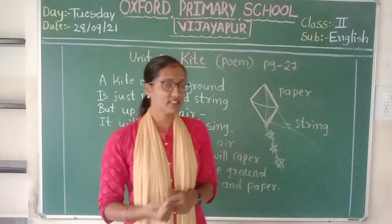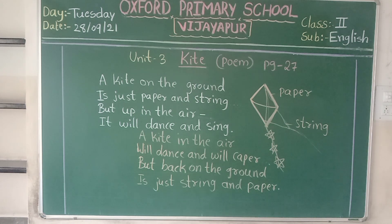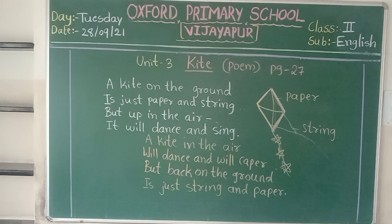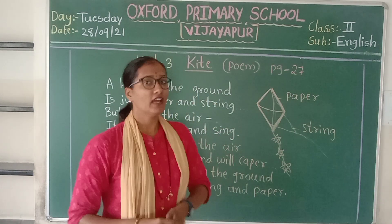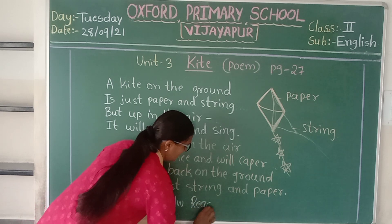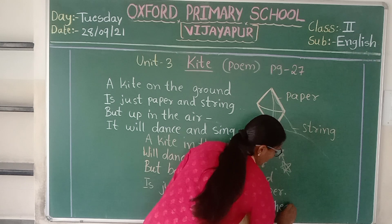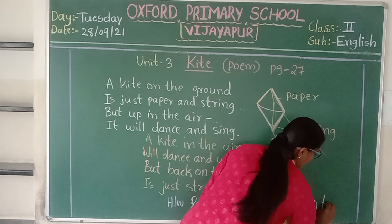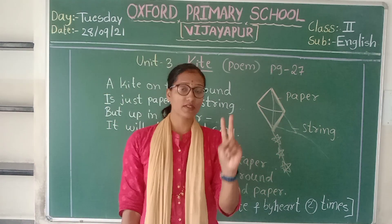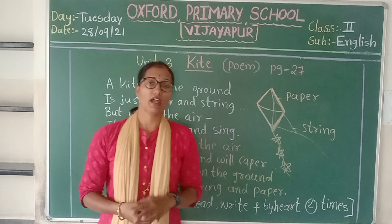Pause the video. Draw a beautiful, colourful kite and write it once. Pause the video and write it. Have you written it? Now for your homework: you have to read, write two times, and learn it by heart. Open the textbook — you will be reading the same poem and you have to send your daily work.